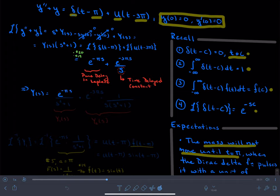And solving for capital Y of s, I get e to the negative pi s over s squared plus 1, and then I get plus e to the negative 3 pi s times 1 over s times s squared plus 1.